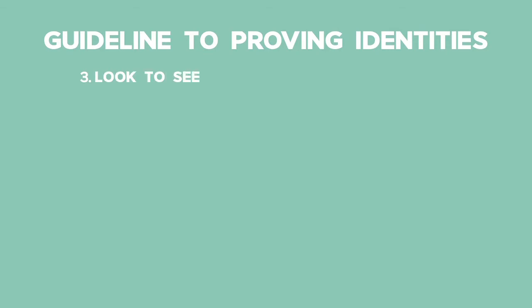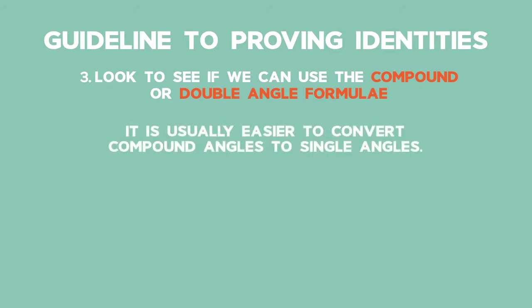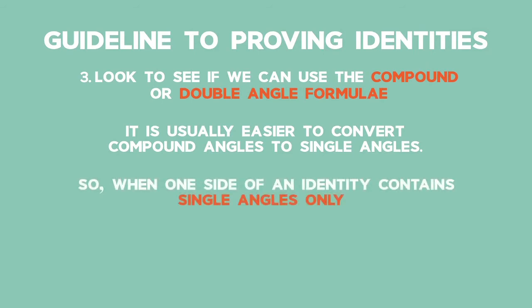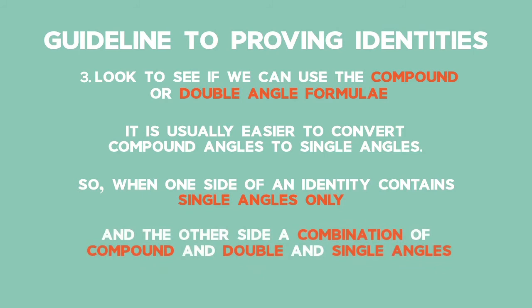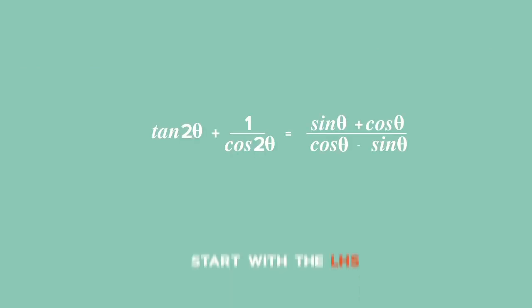And number three: look to see if we can use the compound or double angle formulae. It is usually easier to change compound angles to single angles. So, when one side of an identity contains single angles only, and the other side a combination of compound and double and single angles, we must choose to work with the side with the compound or double angles first.